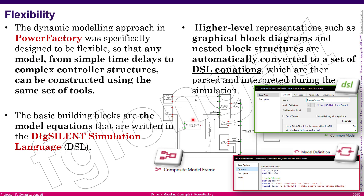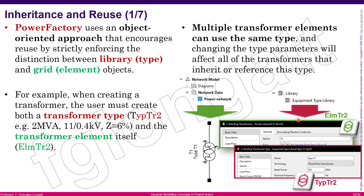This same situation also applies when using DSL. As shown in this slide, I use the red color to represent the composite model frame and the model definition, and green to represent the common model. The common model is located in the network data — it is the interface between the model and the user, connecting the user-defined model to the network element. The composite model and block definitions are located in the library with red color, and they can be reused.